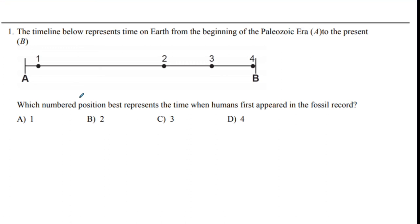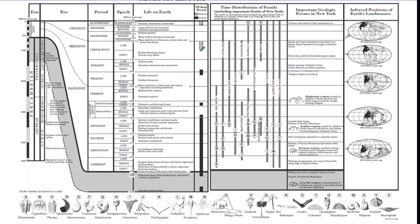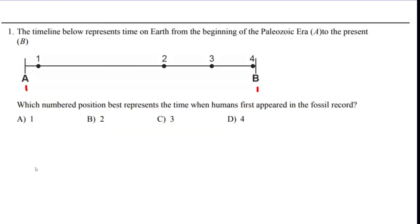Practice question one: a timeline represents Earth from the beginning of the Paleozoic Era to the present. Which position best represents when humans first appeared? Humans appear extremely recently on the timeline, so the answer is D.